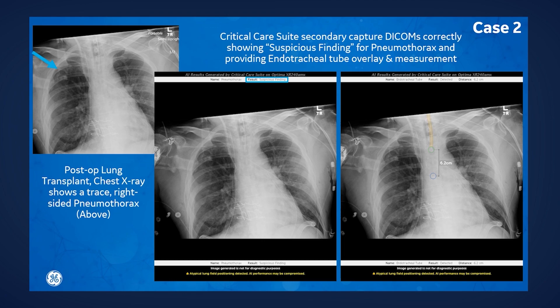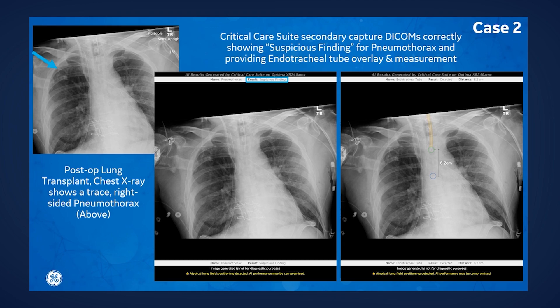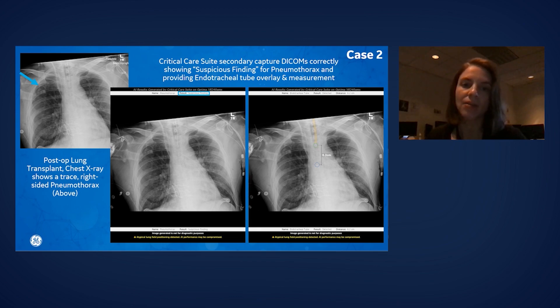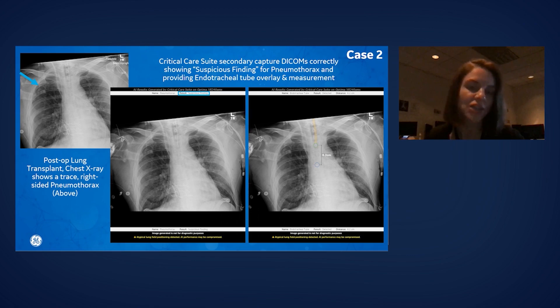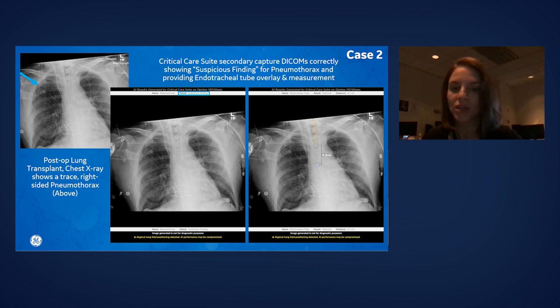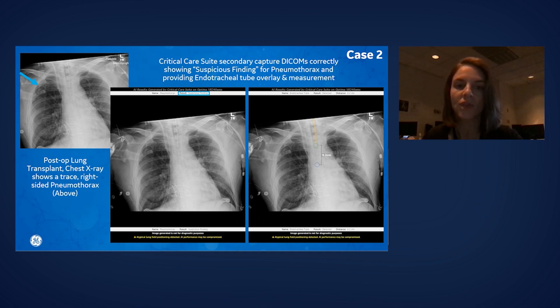I think we'll take a look at another case. This is a case of a patient who recently underwent lung transplantation. I was reviewing this case with a trainee who did not detect an abnormality, but we can see that there is in fact a trace right pneumothorax, and that was indicated as a suspicious finding by this artificial intelligence algorithm — showing a potential application in support of education. You can also see the overlay for the endotracheal tube placement and the distance from the carina annotated. We have the original image and our two secondary captures as they appear in PACS — again a good teaching case for the trainee.